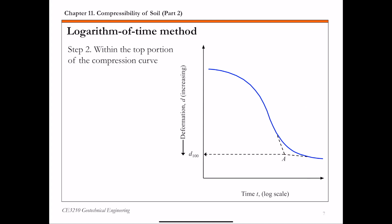In the next step, within the top portion of this compression curve, first you pick time t1 and the corresponding point on this curve we call point B. And then you pick time t2, which is 4 times t1.